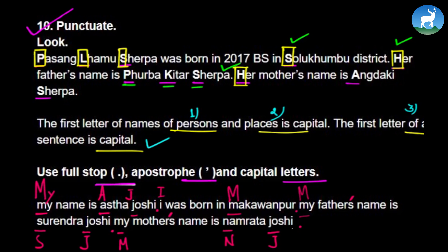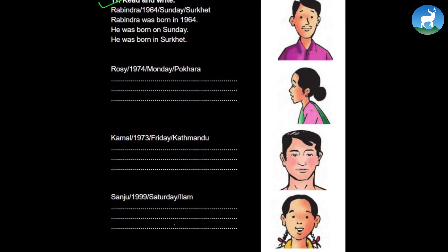Go ahead and capitalize the paragraph, and after that we're moving to the writing section. The writing section says 'read and write'. For Rabindra — born in 1964, on Sunday, in Surkhet — we write: 'Rabindra was born in 1964. He was born on Sunday and he was born in Surkhet.' A grammar note: if it is a year, use 'in'; if it is a day, use 'on'; and if it is a place, use 'in'.